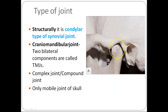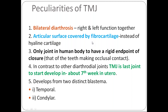Regarding the peculiarities of the TMJ: there are two articulations, so it is called a bilateral diarthrosis type of joint. The right and left joints always function together, not individually. Unlike all other synovial joints, which are covered by hyaline cartilage, the TMJ is covered by fibrocartilage.